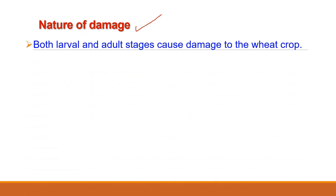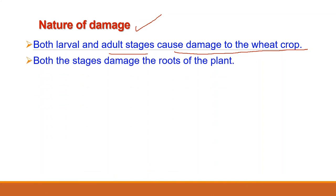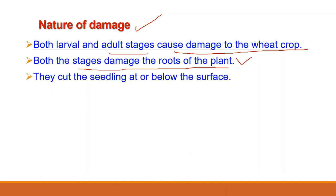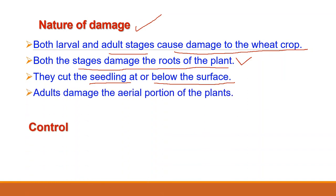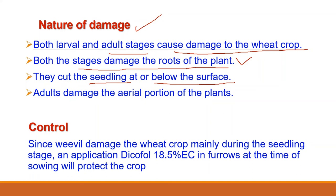Both the larval (grub) and adult stages cause damage to the wheat crop. This insect damages the roots of the plant during both larval and adult stages, but adults can also damage the aerial portion of the plant. They attack the plant at the seedling stage, cutting the seedling at or below the soil surface. An application of Dicofol 18.5% EC in furrows at the time of sowing will protect the crop to a certain extent.